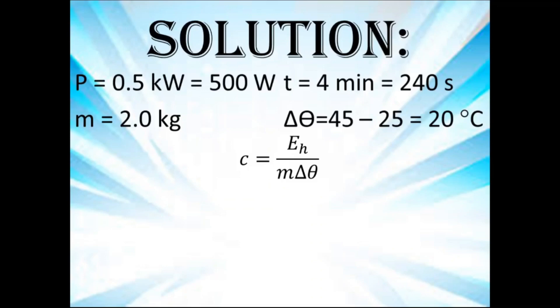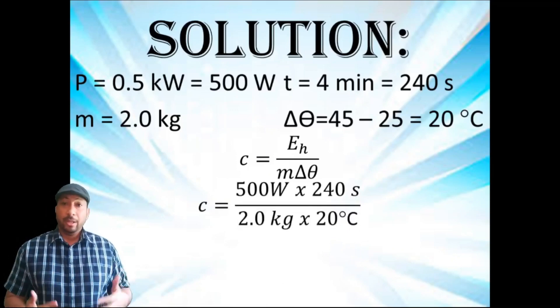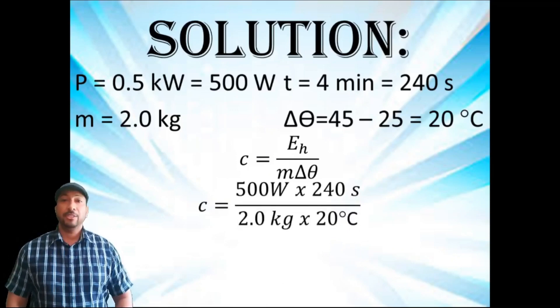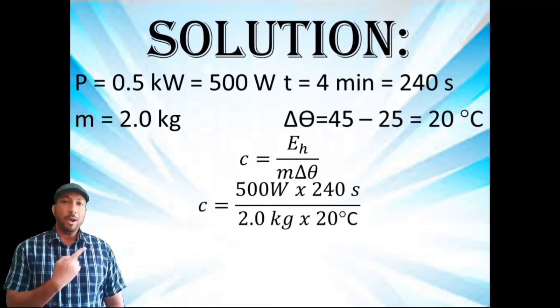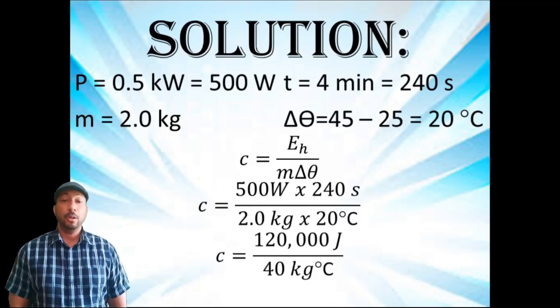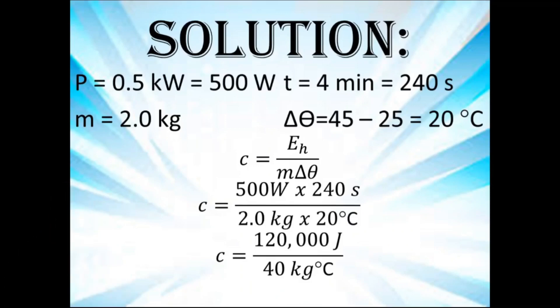Here, this transformation is from electrical energy to heat energy. So 500 watts multiplied by 240 seconds divided by 2.0 kilograms times 20 degrees Celsius. That would be 120,000 joules divided by 40 kilogram degrees Celsius, and that will give us that the specific heat capacity of the liquid is 3000 joules per kilogram degrees Celsius.